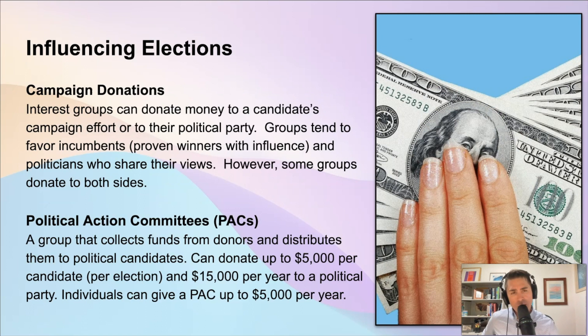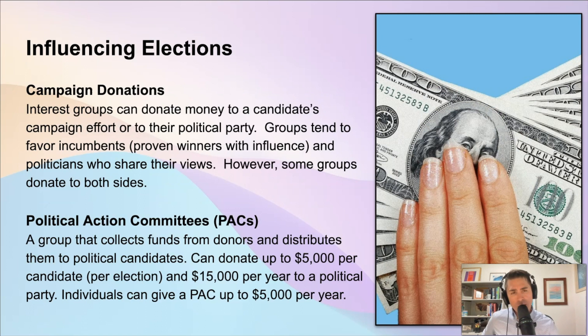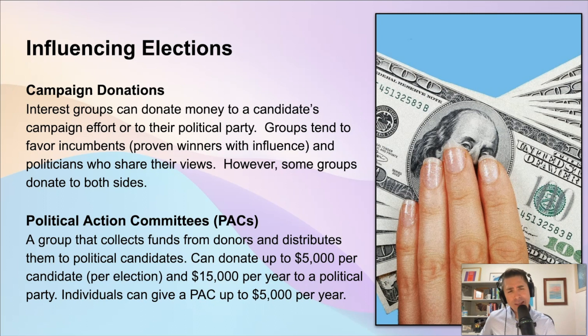Interest groups representing individual citizens, big corporations, or trade associations can donate money either directly to a candidate or to a political party. Some groups tend to favor incumbents — the people already in office — because they've proven they can win and they already have influence over which laws are passed or defeated. While most interest groups donate to candidates who see eye to eye on the issues, some groups play both sides, donating half their money to Republicans and half to Democrats, hoping that regardless of who gets elected, they'll still have access and goodwill with that member.